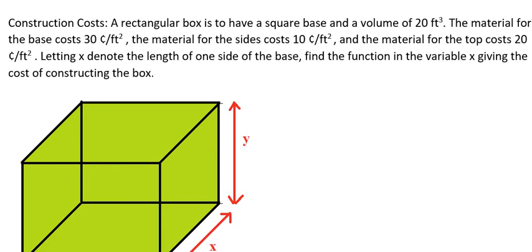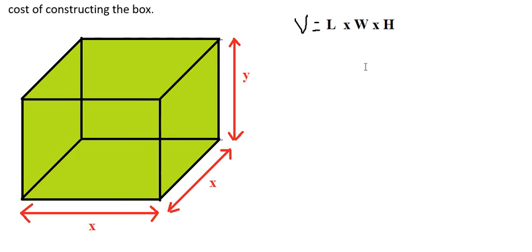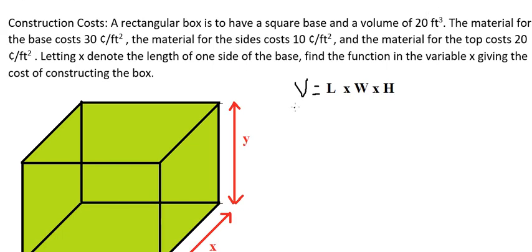We know that the volume equals the length multiplied by the width multiplied by the height. So if we look carefully, we have s, s, and y. So we have 20 equals s squared times y.